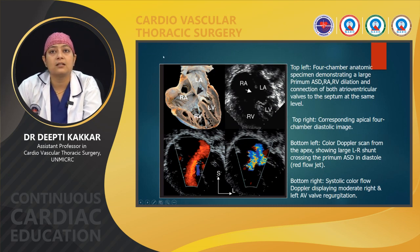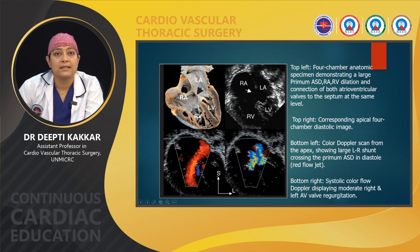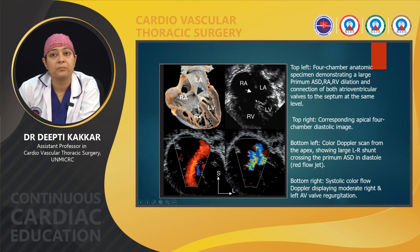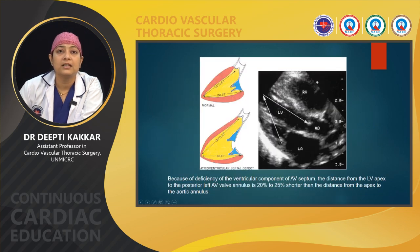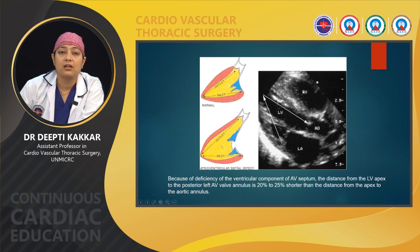This is the cut section of the heart — four-chamber view — showing the primum ASD, RA and RV, the communication at the interventricular level, and both AV valves at the same level. The same can be appreciated on the echo in a corresponding four-chamber diastolic image. This Doppler scan from the apex shows a large left-to-right shunt crossing the primum ASD, and the Doppler flow image displays moderate right and left AV valve regurgitations. Here we can also see the abnormally elongated LV outflow tract — in normal heart the inlet-to-outlet ratio is equal, but in AVCD the outlet septum is enlarged with shortening of the inlet septum, leading to the characteristic goose neck deformity.